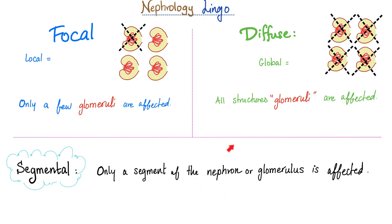A nephron, of course, includes the tubule — the proximal tubule, loop of Henle, distal collecting tubule, etc.